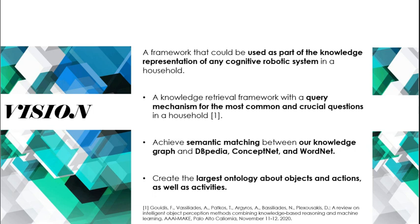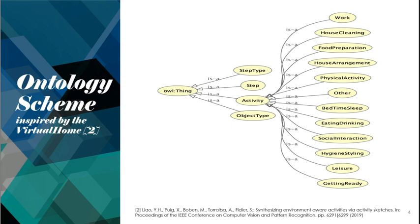Our ontology was inspired by the VirtualHome dataset, which is a dataset that contains sequences of actions about how to perform human-scale activities. We took their hierarchy and put it in a form of representation that could be used as linked open data. The class 'Activity' contains all of the activities that were part of the VirtualHome dataset, as well as the hierarchy between them.